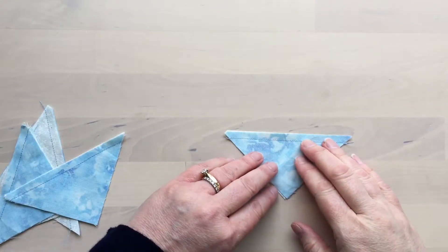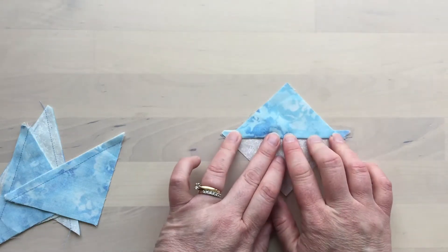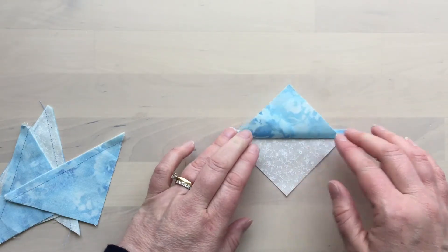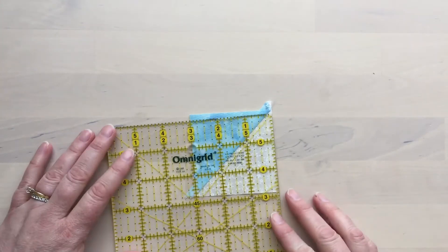Once the stitching is done carefully open with the seam pressed to the dark side, finger press and then press with an iron. The finished piece should be just the right size.